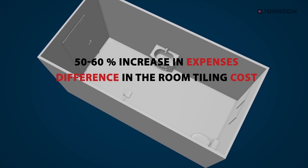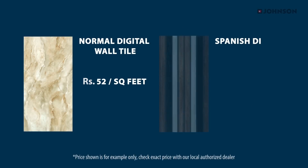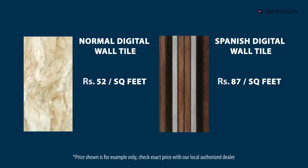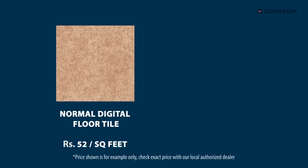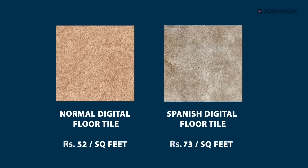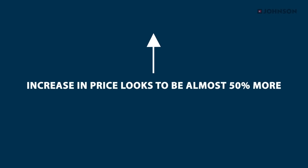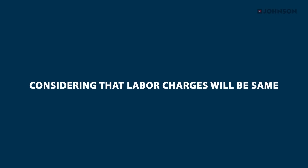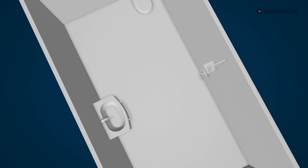Let's try to understand this. For example, you might find a normal digital wall tile for Rs.52 per square feet and a Spanish digital wall tile for Rs.87 per square feet. Similarly, a coordinated normal digital floor tile would be Rs.52 per square feet. Here, the increase in price looks to be almost 50% more, but considering that labor charges will be the same, spending a little extra for the tile will be worth the investment.